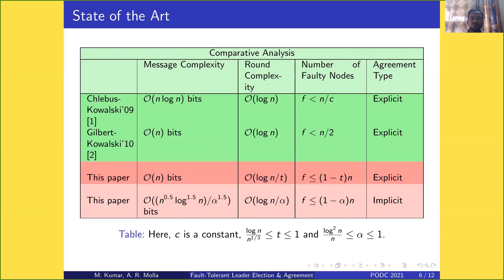In this paper, we maintain message complexity O(n) and round complexity O(log n) if the fraction of non-faulty nodes is constant. The improvement is that we can tolerate more faulty nodes, where this fraction is log(n) / n^(1/3).